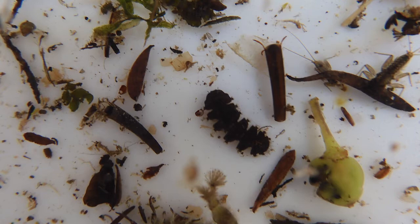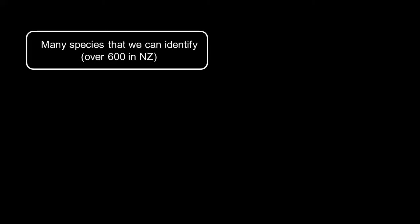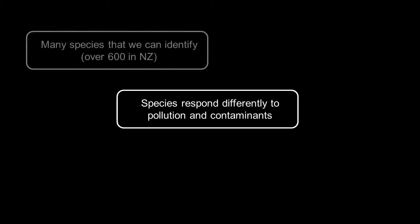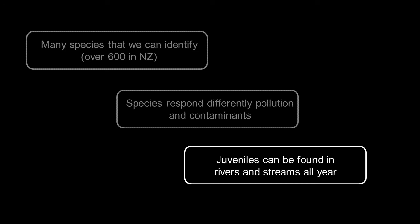There are a number of pretty good reasons why we use benthic invertebrates. Part of this is because they're great indicators of the level of pollution or disturbance inside a stream or river system. Many species have been identified — we know over 660 described species of benthic invertebrates. We also know that they respond very differently to different types of pollution, so individual species can be good indicators of different activities. The juveniles, the nymphs and larvae, can be found in streams and rivers all year round, so they're long-term indicators of what's going on in the system.